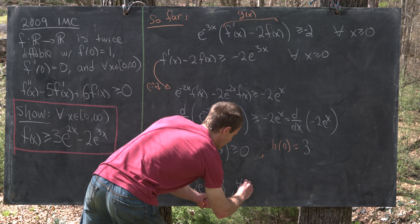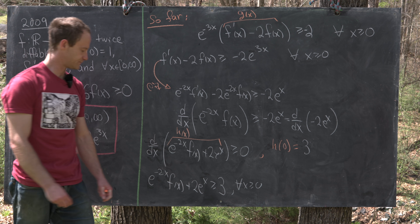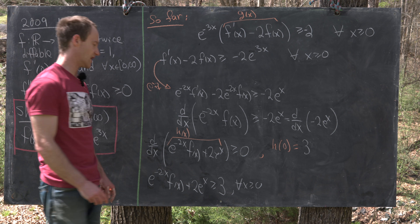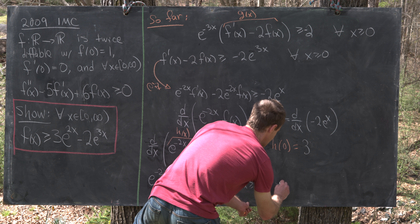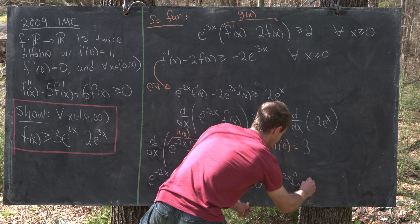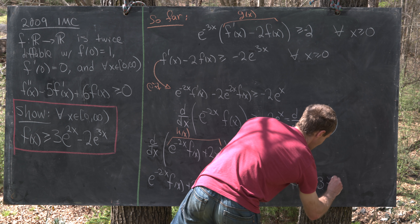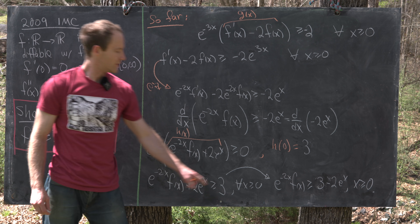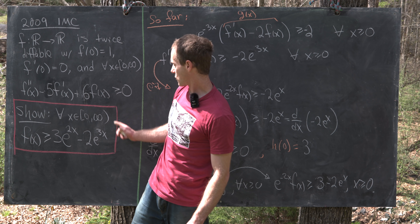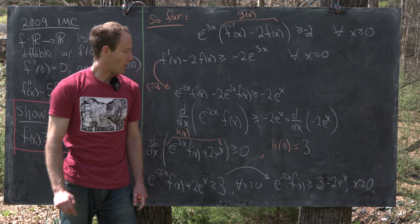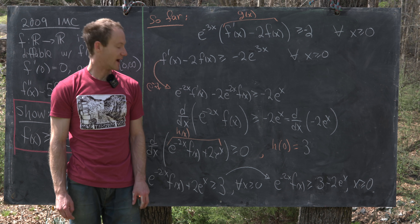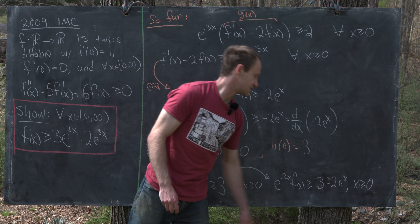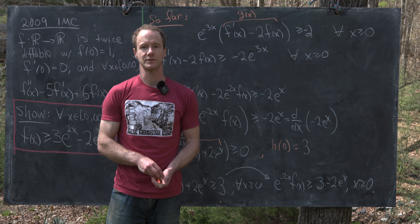Moving 2e^{x} to the other side: e^{−2x}f(x) ≥ 3 − 2e^{x} for all x ≥ 0. Finally, multiplying both sides by e^{2x} gives f(x) ≥ 3e^{2x} − 2e^{3x}, which is exactly what we needed to show. And that's a good place to stop.